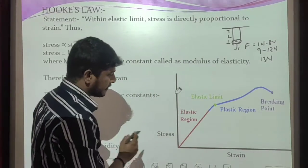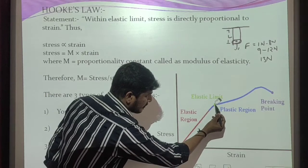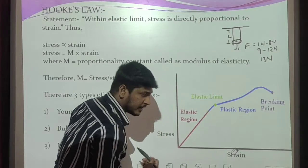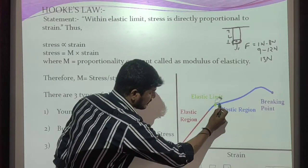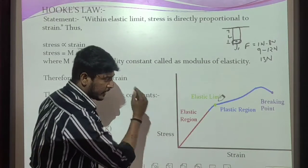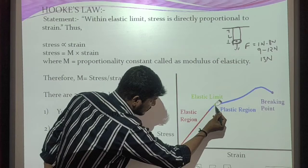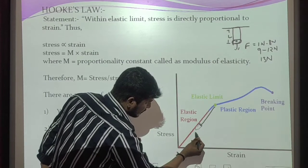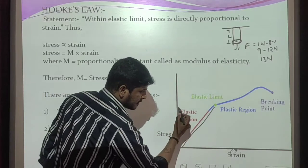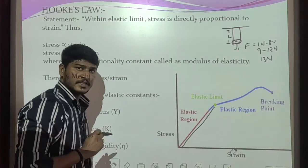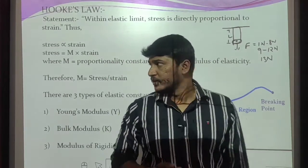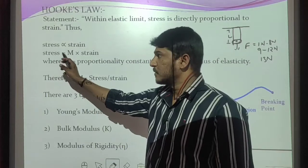From the graph, from 0 to a certain point — that is, up to the elastic limit — stress is directly proportional to strain. When we cross the elastic limit, stress is no longer directly proportional to strain. Hooke's law is defined within this elastic limit, where stress is directly proportional to strain.